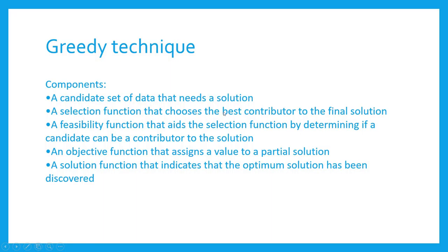The components of greedy technique are: a candidate set of data that needs a solution; a selection function that chooses the best contributor to the final solution; a feasibility function that aids the selection function by determining if a candidate can contribute to the solution; an objective function that assigns a value to a partial solution; and a solution function that indicates the optimum solution has been discovered. Greedy technique also has many algorithms such as minimum spanning tree.